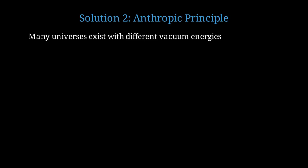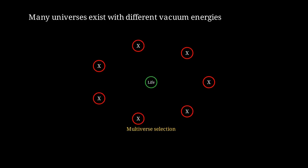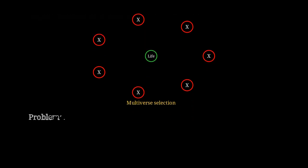We find ourselves in one of the rare universes where vacuum energy is small enough for life to exist. We couldn't observe any other universe. The problem with this explanation is that it's not really testable or predictive. It doesn't explain why the value is what it is.